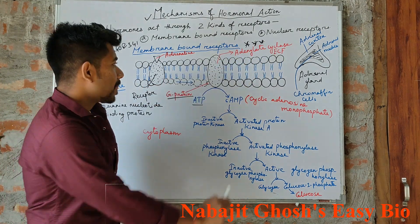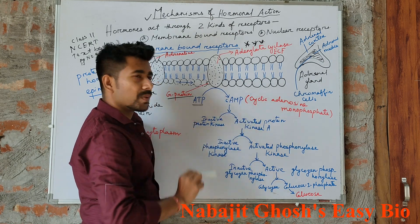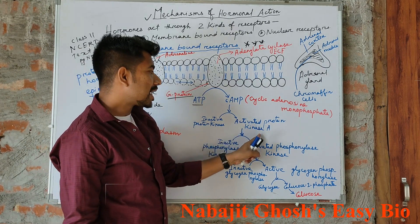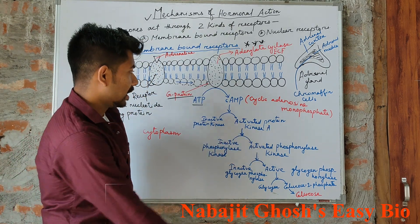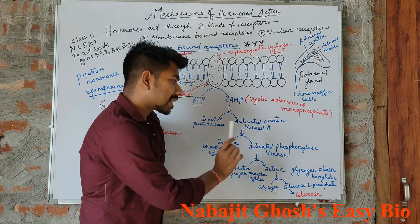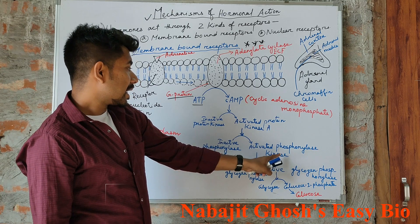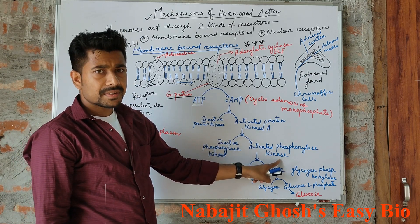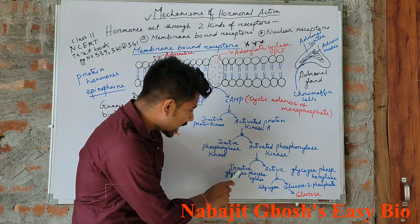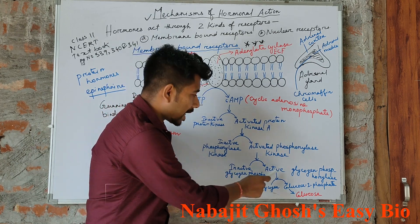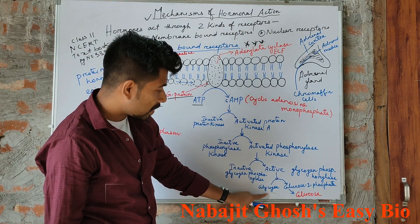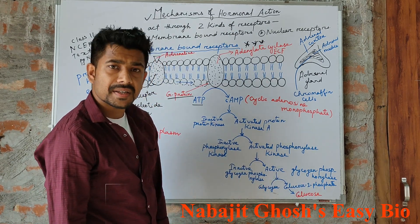This cyclic adenosine monophosphate activates protein kinase enzyme. After that, protein kinase enzyme further activates phosphorylase kinase enzyme, which is also a protein kinase. When the phosphorylase enzyme is activated, then it converts inactive glycogen phosphorylase into active glycogen phosphorylase. Then glycogen phosphorylase enzyme converts glycogen into glucose-1-phosphate, and as a result, glucose is formed.